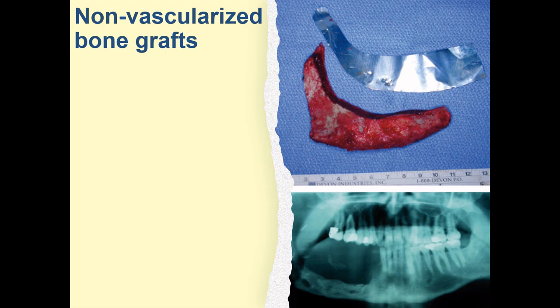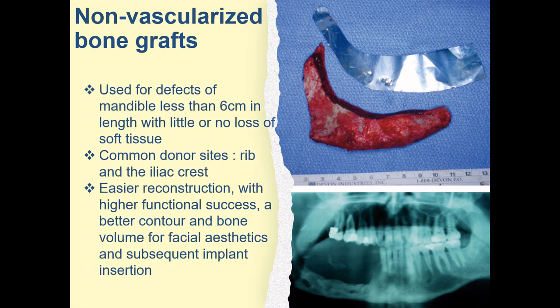Non-vascularized bone grafts are used for mandibular defects less than 6 cm in length with little or no loss of soft tissue. The bone graft is placed in a well-vascularized bed and the edges and bone fragments are stripped of periosteum so that adequate bone-to-bone contact is established. Common donor sites are the rib and iliac crest. This allows for easier reconstruction with higher functional success, better contour, and improved bone volume for facial aesthetics and subsequent implant insertion.